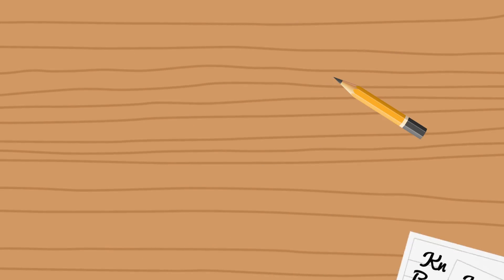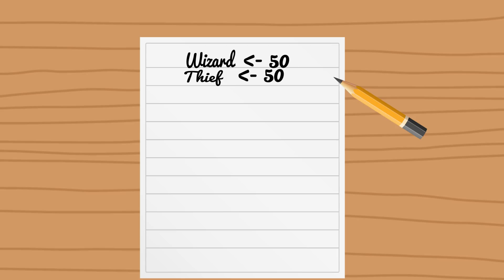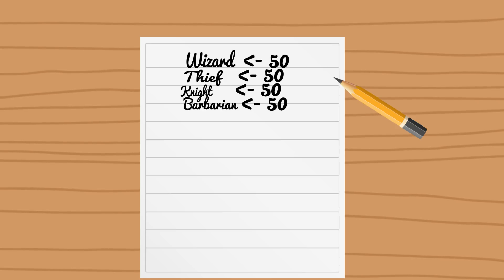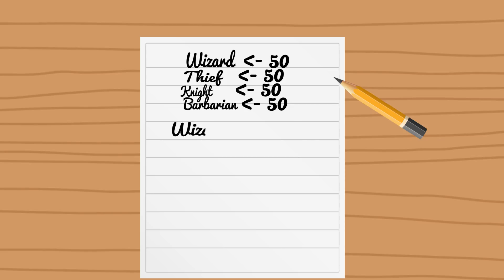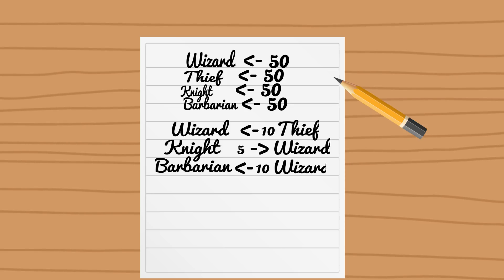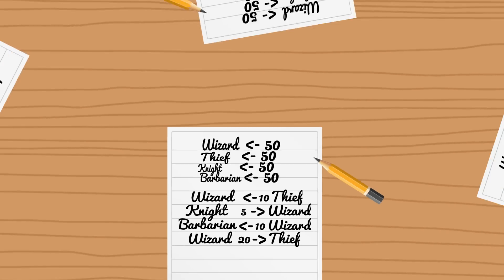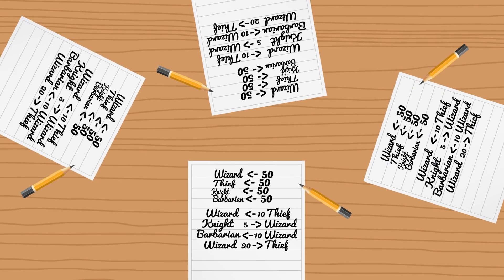They decided to start over and redistribute 50 coins to each player. To record this, each player would add four transactions to their list, showing the game sending 50 coins to every player — kind of like getting money from the bank in Monopoly. Then, during the game, as the players trade amongst themselves, more transactions are added to the list. And since every player is recording every transaction, it becomes very difficult to get away with cheating.